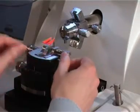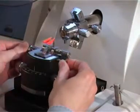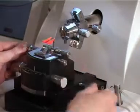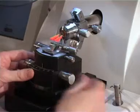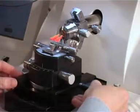A glass knife with a trough attached is secured in the knife holder and the clearance angle adjusted to six degrees. The knife block is then moved towards the specimen and clamp.